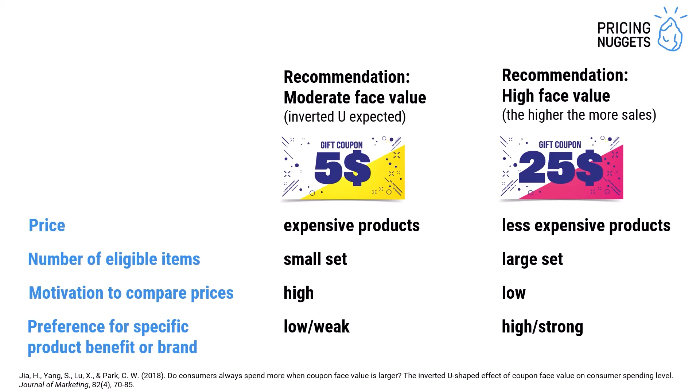The second factor is the number of eligible items. Researchers found that if cognitive load is high, customers are less likely to calculate percentage savings. So for large sets of eligible items, a higher coupon value might also lead to a higher transaction amount. If the set is small, we are more likely to expect the inverted U relationship between coupon face value and amount spent per transaction.